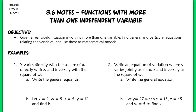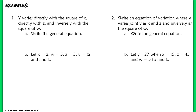This lesson is for section 8.6. Today we're going to be working with functions that have more than one independent variable. Given a real-world situation where we have more than one variable, we're going to find general and particular equations that relate the variables and use them as mathematical models. Our goal is to build up to working with real-world problems. Let's get started with our first two examples — these are not word problems, just practice before we start with the word problems.